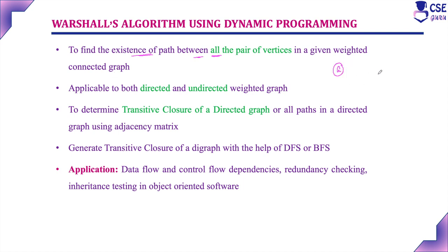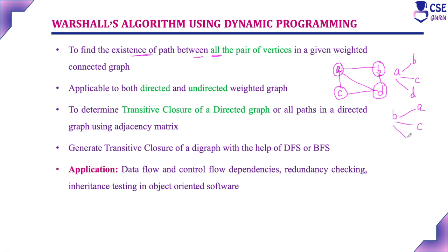For example, considering this given graph, it will find the existence of path between all pair of vertices. That is, considering vertex A: A to B, whether there is a path or not; A to C and A to D. Similarly, from vertex B: B to A, B to C, B to D. From C: C to A, C to B, C to D. From D: D to A, D to B and D to C. That is, from each vertex, whether there is an existence of path to all other vertices in this given graph — this is Warshall's algorithm.